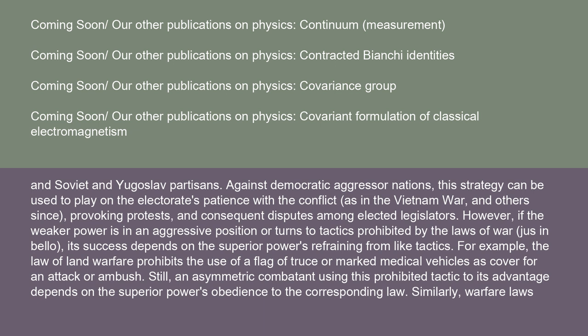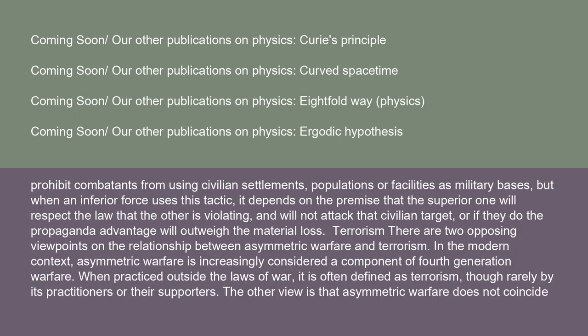However, if the weaker power is in an aggressive position or turns to tactics prohibited by the laws of war, its success depends on the superior power refraining from like tactics. For example, the law of land warfare prohibits the use of a flag of truce or marked medical vehicles as cover for an attack or ambush. Similarly, warfare laws prohibit combatants from using civilian settlements, populations, or facilities as military bases. But when an inferior force uses this tactic, it depends on the superior one respecting the law — or, if they attack that civilian target, the propaganda advantage will outweigh the material loss.